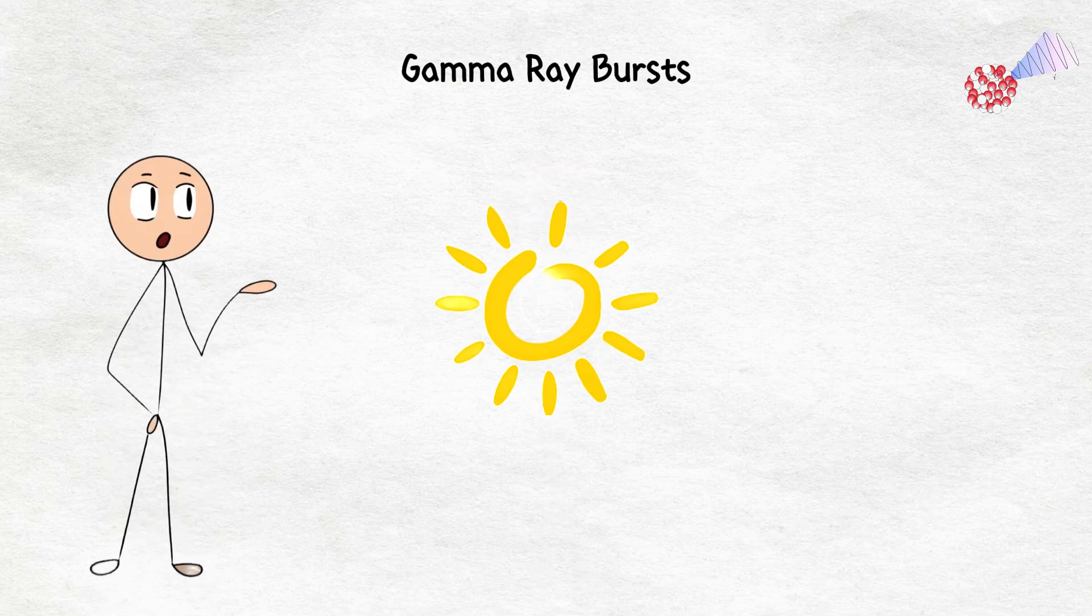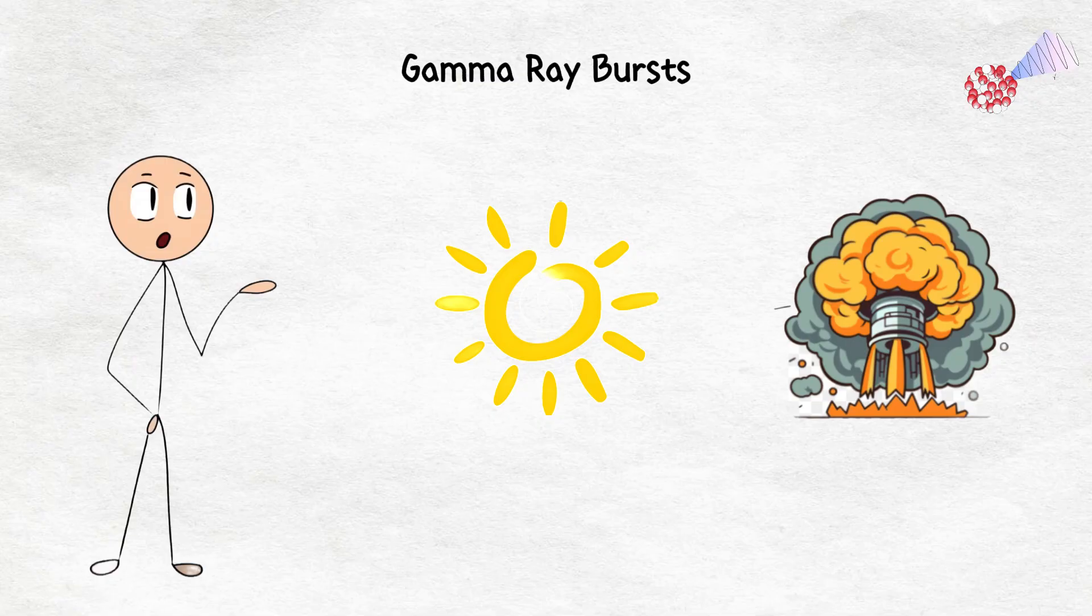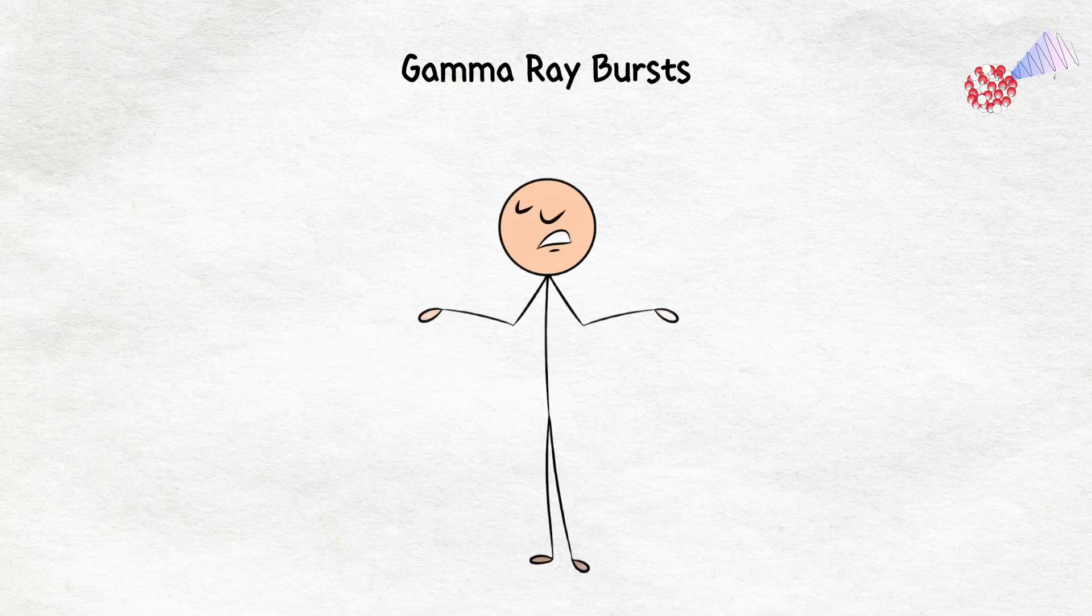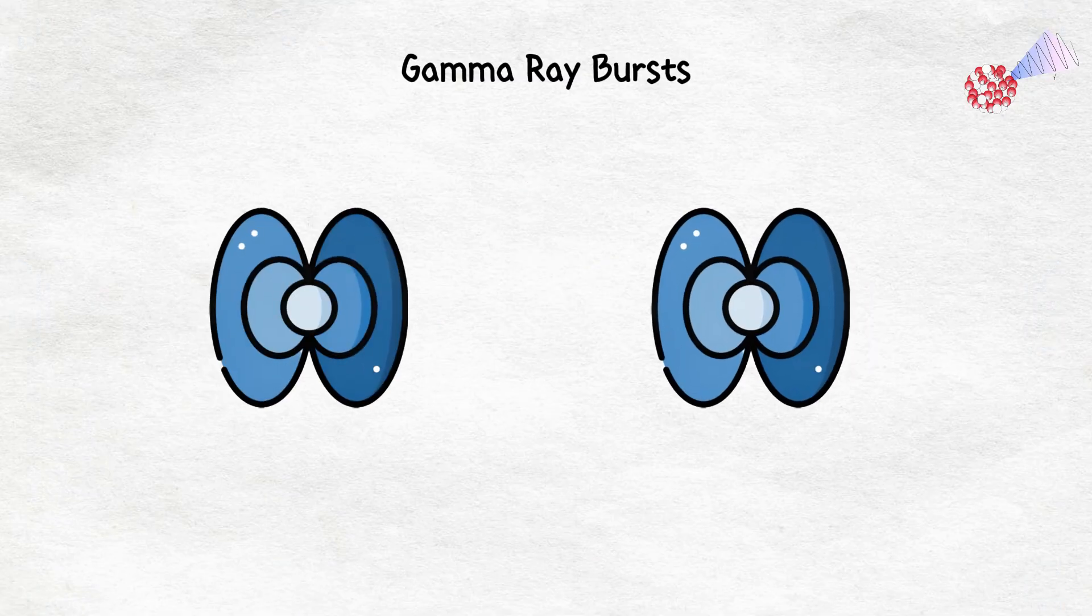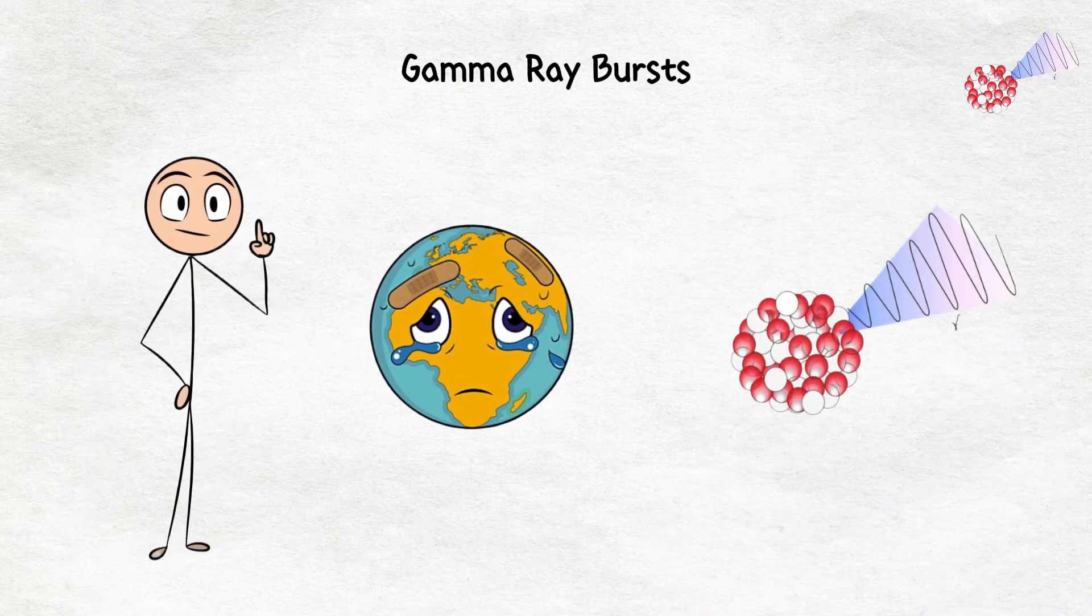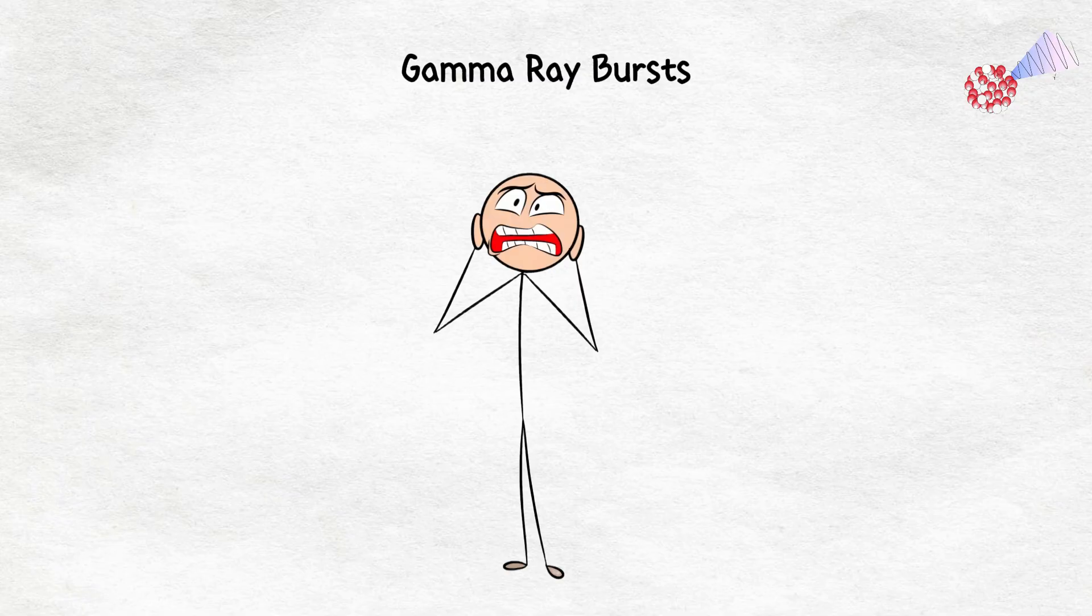The sun, the giant ball of nuclear fire that keeps us alive, isn't even close to matching this kind of power. These bursts are caused by some pretty intense events, like stars collapsing into black holes or two neutron stars colliding, and they are invisible. That is right, you wouldn't even see one coming. If Earth ever got hit by a gamma ray burst, it would be game over before we even knew what hit us.